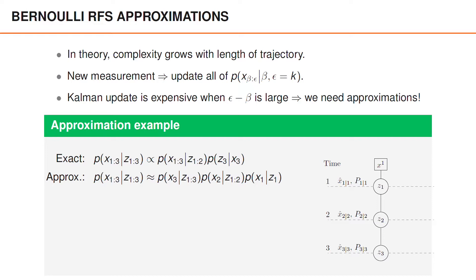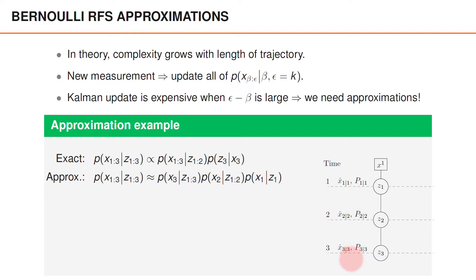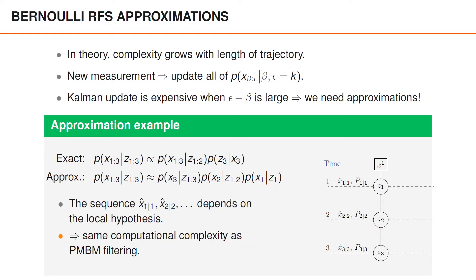If the distributions are Gaussian, the posterior is then fully determined by the moments x-hat_1|1, P_1|1, x-hat_2|2, P_2|2, and so on. These moments depend on the association sequence, and therefore depend on the local hypothesis. The time interval also depends on the local hypothesis. Interestingly, the computational complexity for handling the Bernoulli components no longer grows with epsilon minus beta, and since these moments are also computed in the PMBM filters, this approximation enables us to develop a PMBM tracker with roughly the same complexity as a PMBM filter.